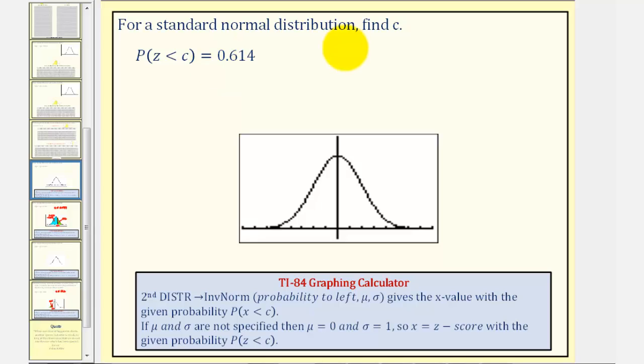For a standard normal distribution, we want to find C, such that the probability of Z being less than C equals 0.614.